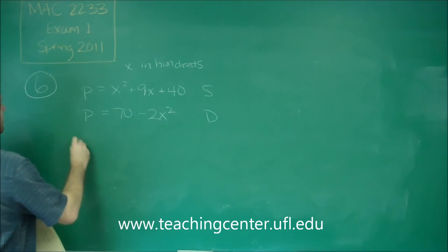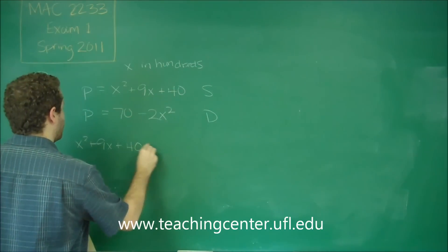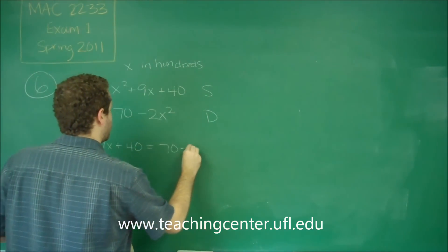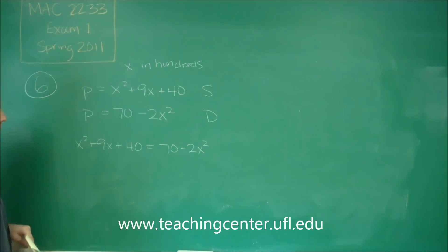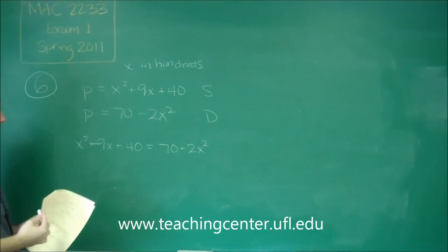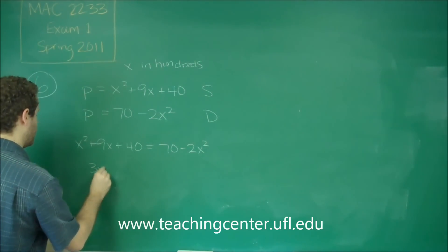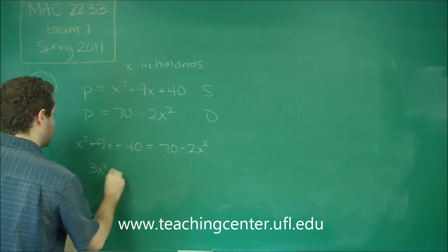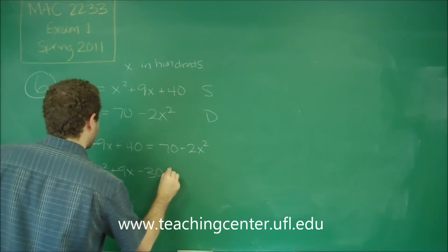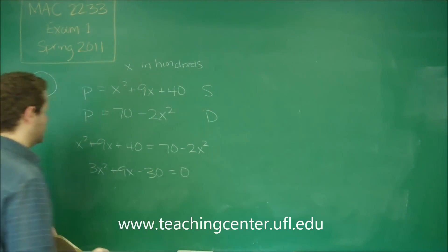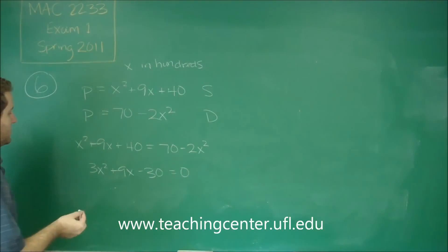Let's set these equal to each other: x squared plus 9x plus 40 equals 70 minus 2x squared. It's easiest to get everything on one side, so we get 3x squared plus 9x, and 40 minus 70 gives us negative 30, equals zero. We have a quadratic equation, and we can factor out a 3.